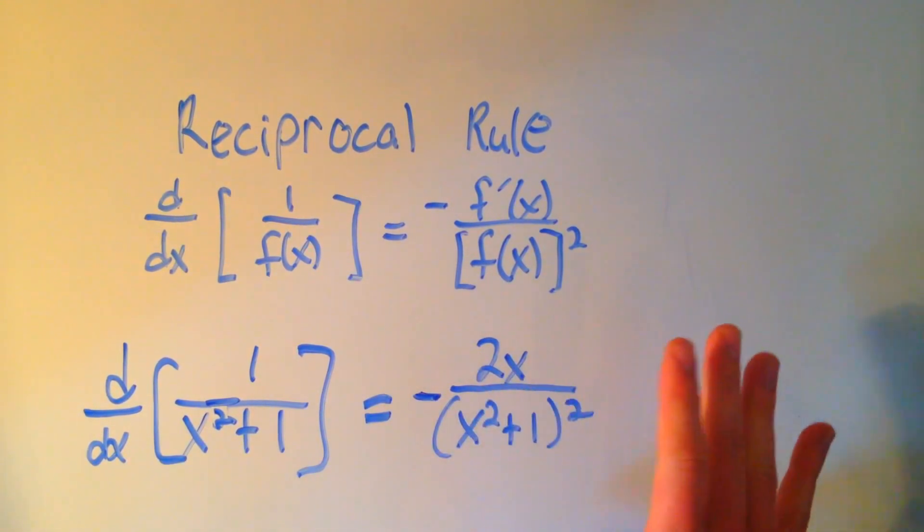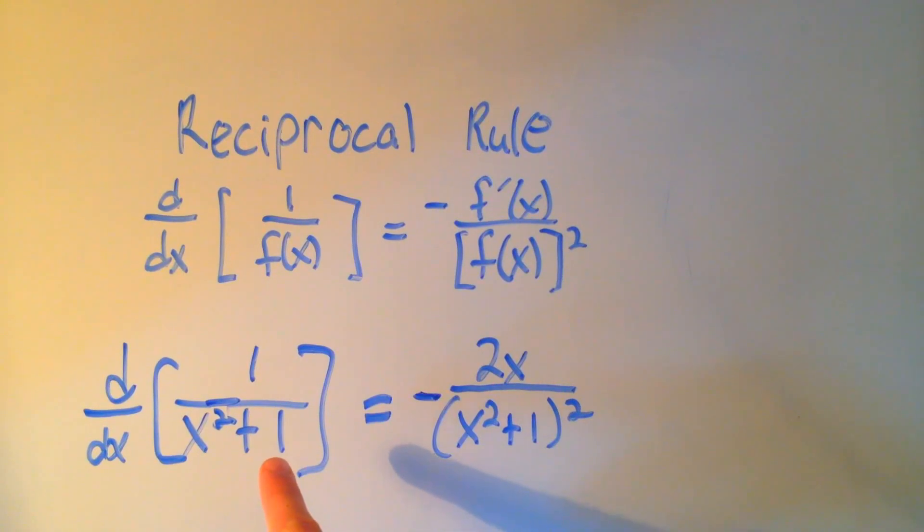You could have used the quotient rule on this. You could have also rewritten this and done it with a chain rule. So whichever you prefer.